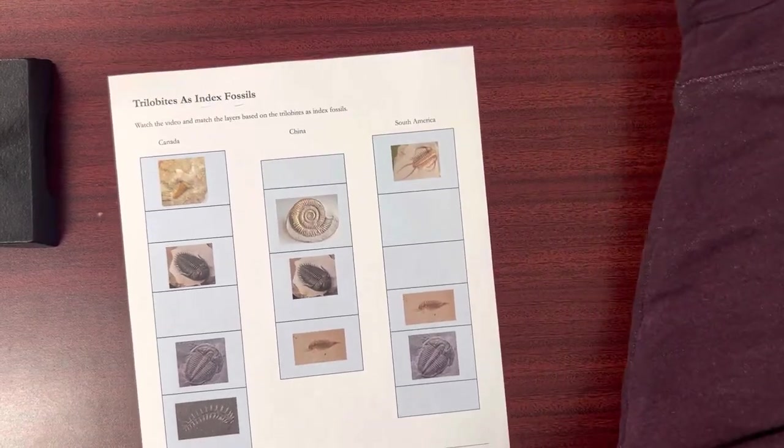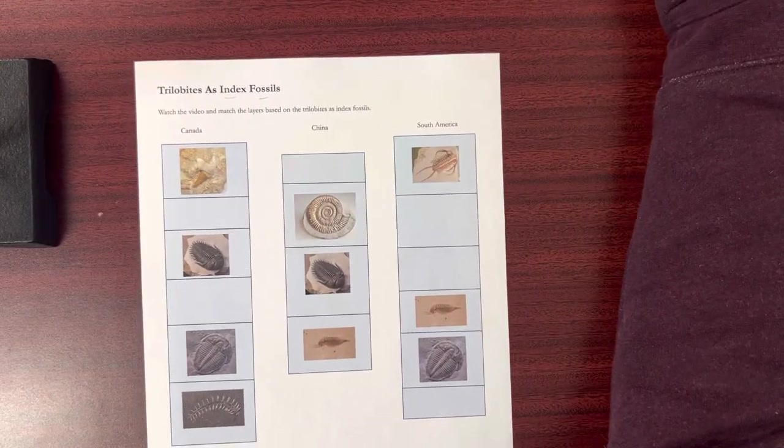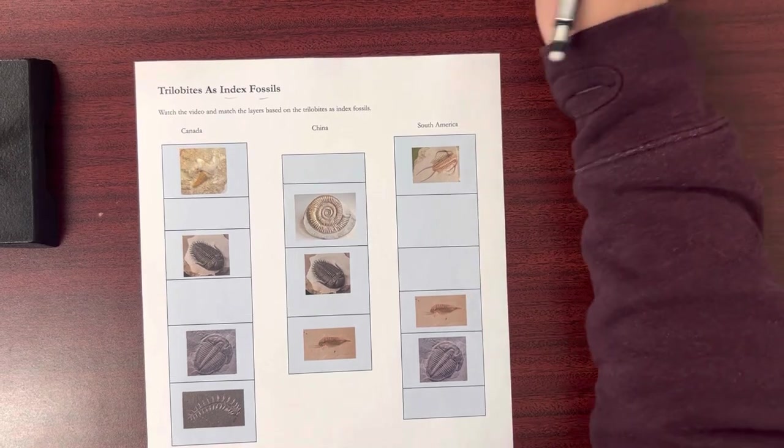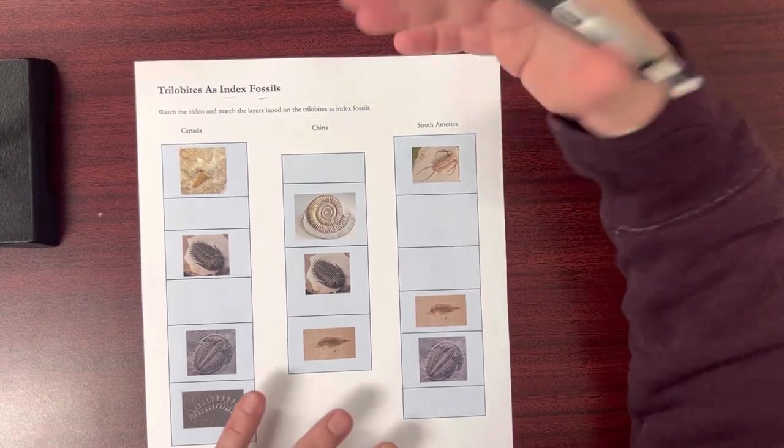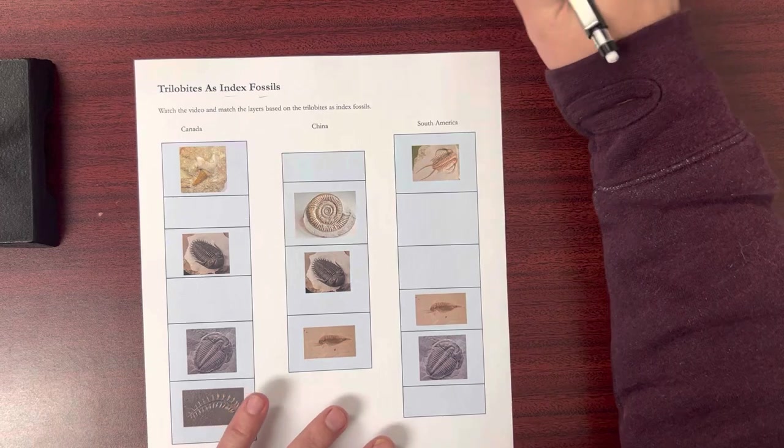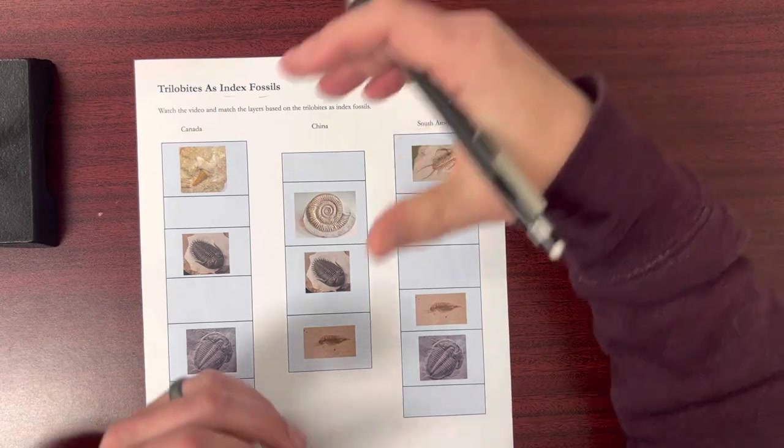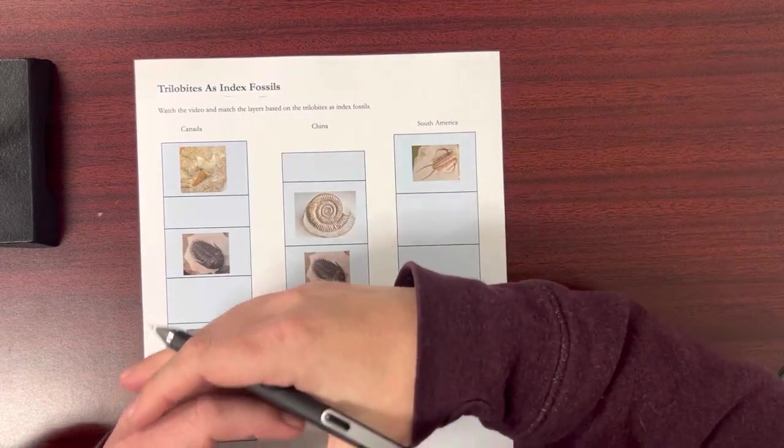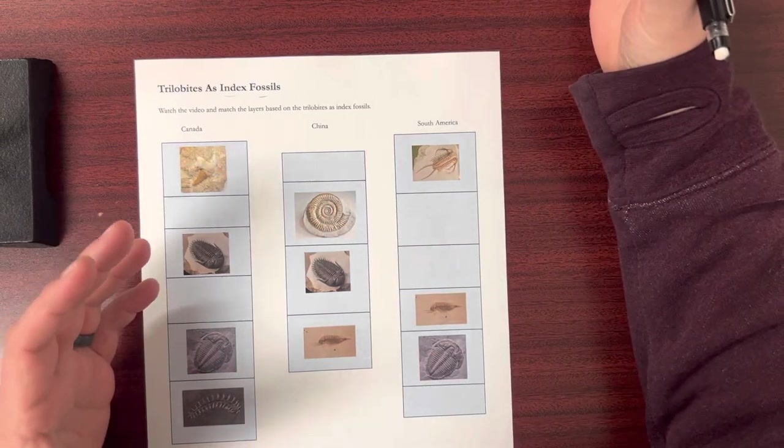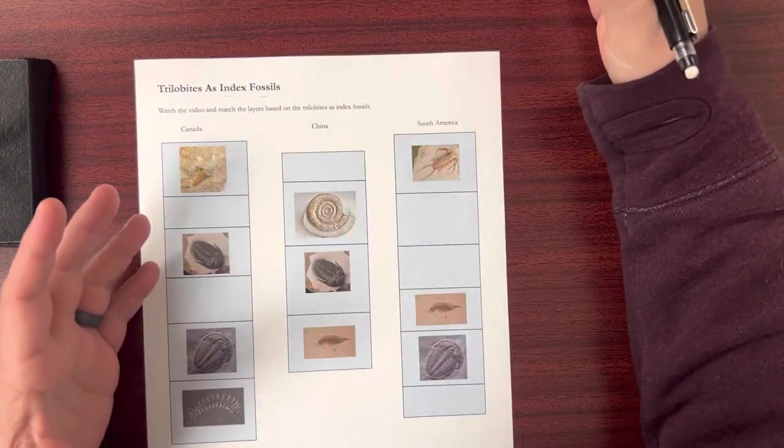Now, an index fossil is a term used in geology for certain types of fossils that are very common. These fossils are found over many parts of the world, so a wide geographic distribution.